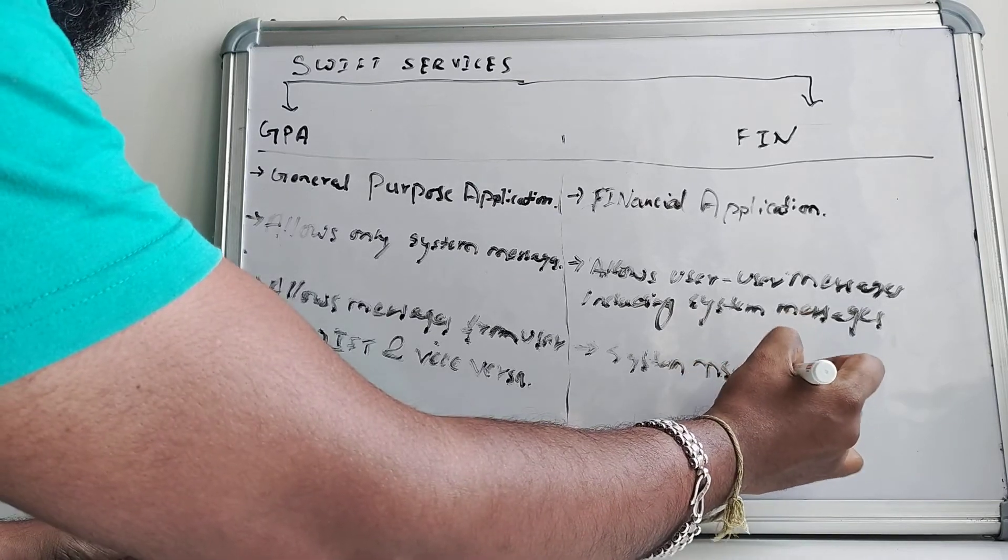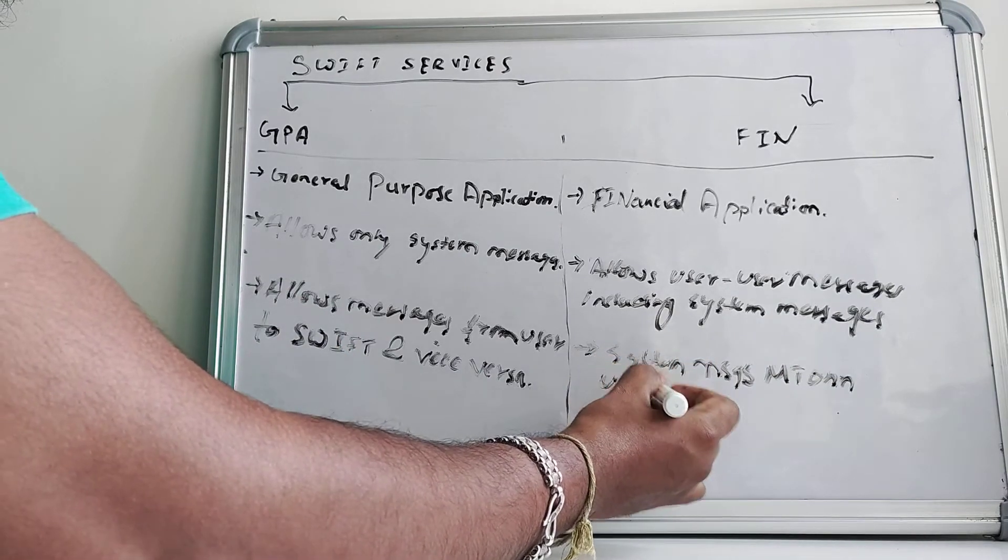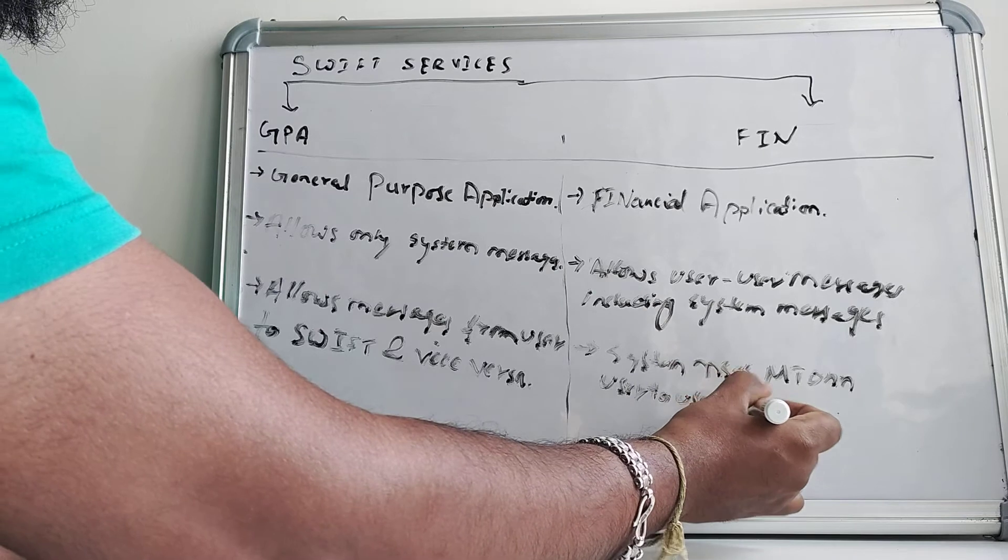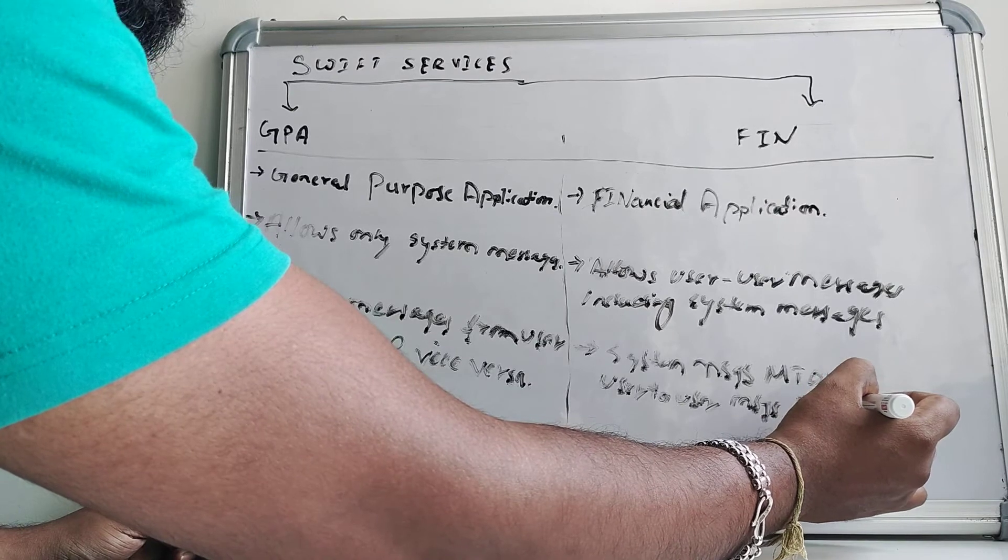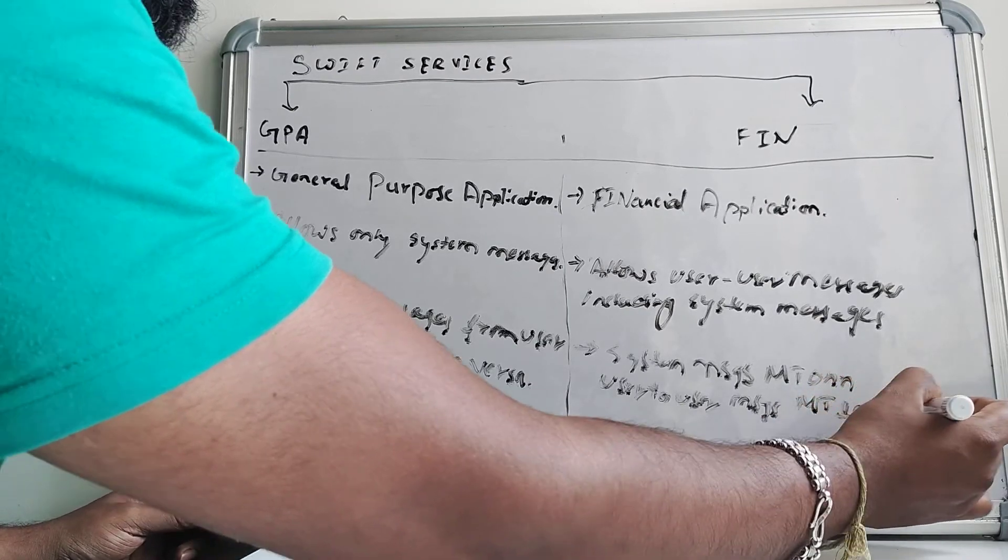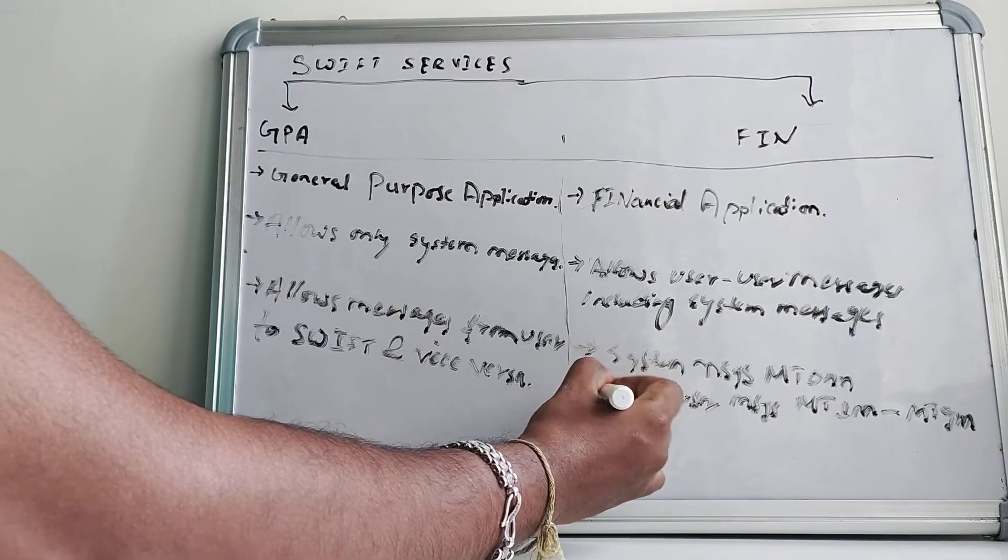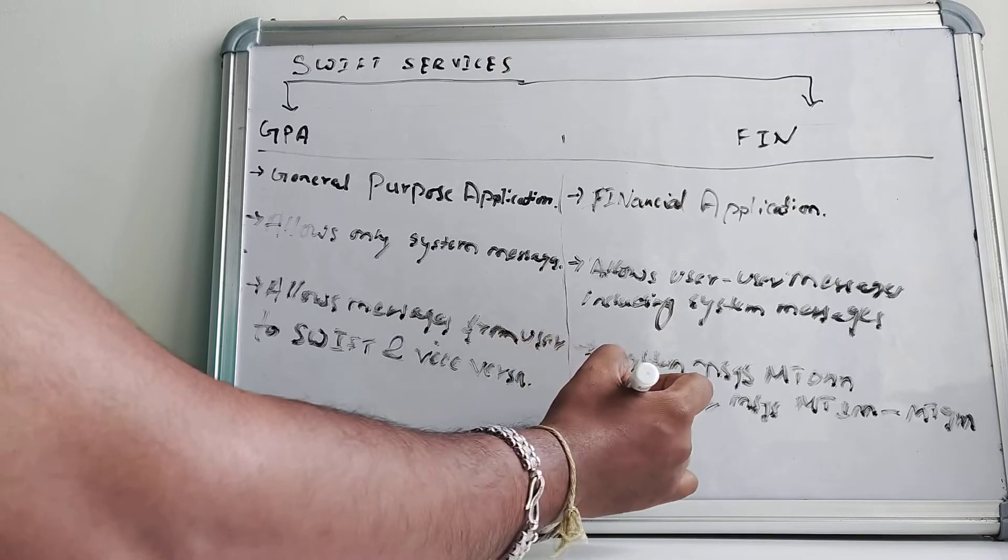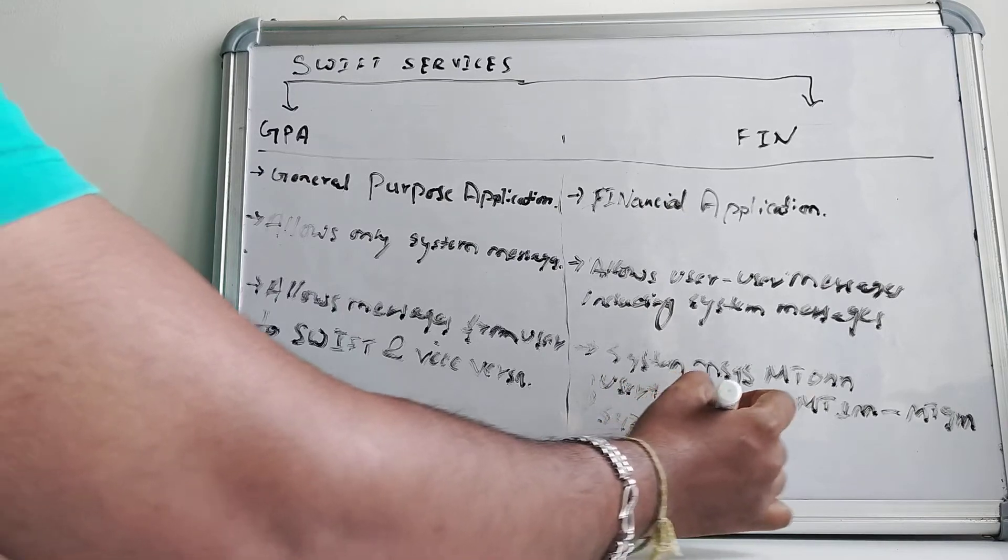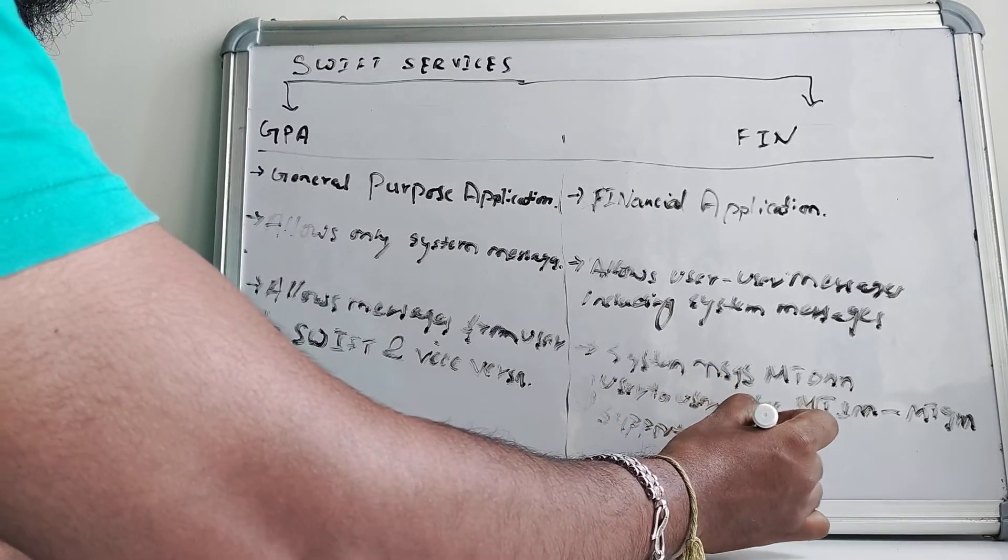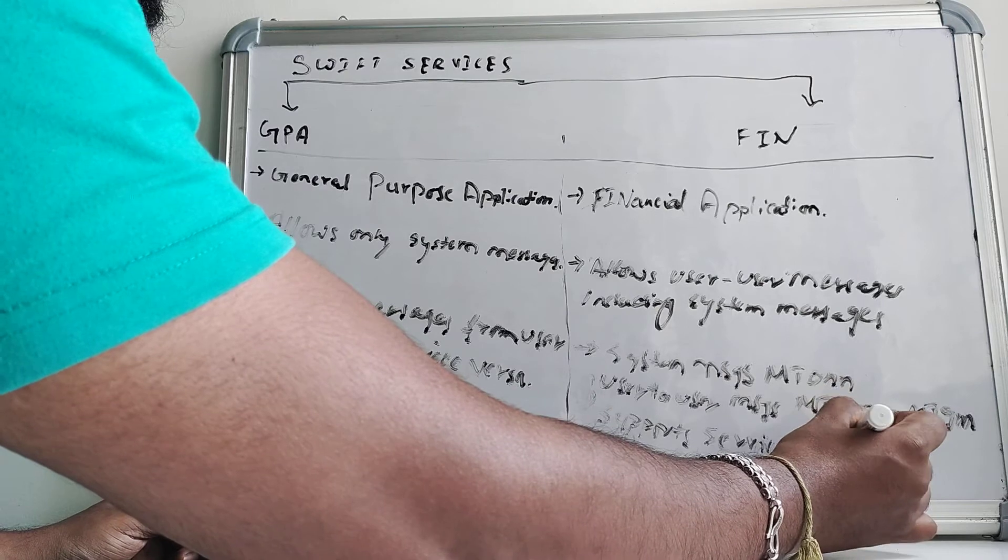That is MT 0 and N for system messages, user to user messages which are MT 1 and N to MT 9 and N. It also supports service messages like acknowledgments.